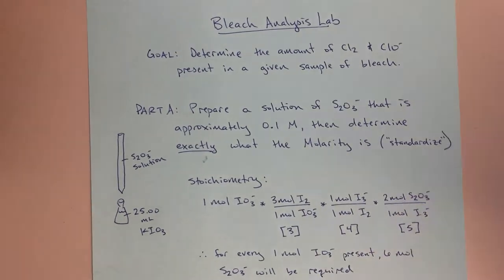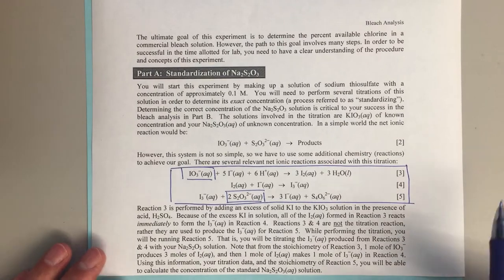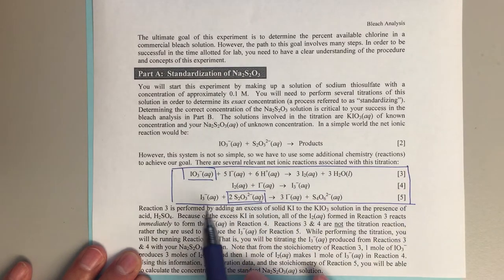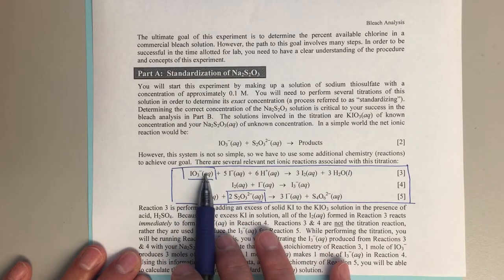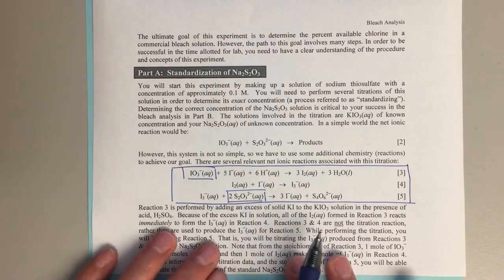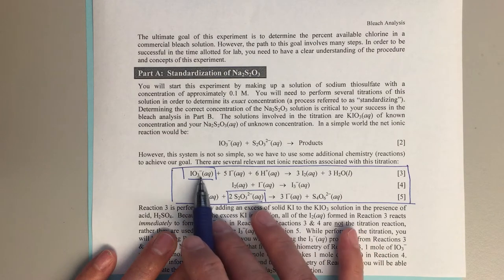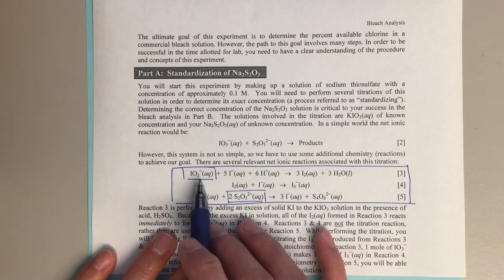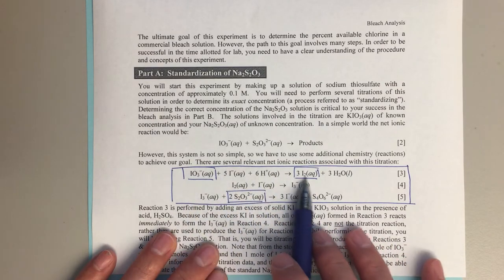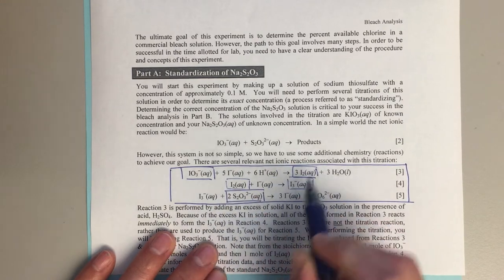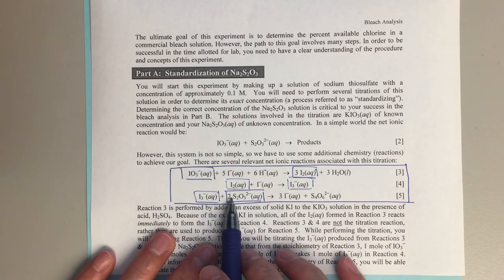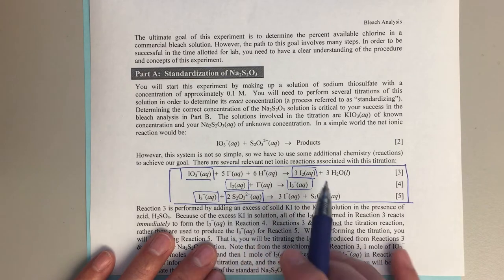I want to draw your attention to the actual lab manual. Equations 3, 4, and 5 show the relationship between IO3⁻ and S2O3. We want to know: starting from a known moles of IO3⁻, how many moles of S2O3 result? From equation 3, there's a one-to-three ratio between IO3⁻ and I2. That I2 is in a one-to-one stoichiometric relationship with I3⁻ in equation 4.